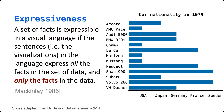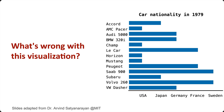Let's look at this visualization on the right — it's showing car nationality in 1979. Notice that we have US, Japan, Germany, France, and Sweden on the y-axis, with bars representing car nationality from those particular countries. That is not inherently wrong in the sense that the designer didn't manipulate the data, but they chose bars to represent categorically different information. When we see bars, we're thinking about quantitative values — a range from one to ten to twenty — not categories per se.